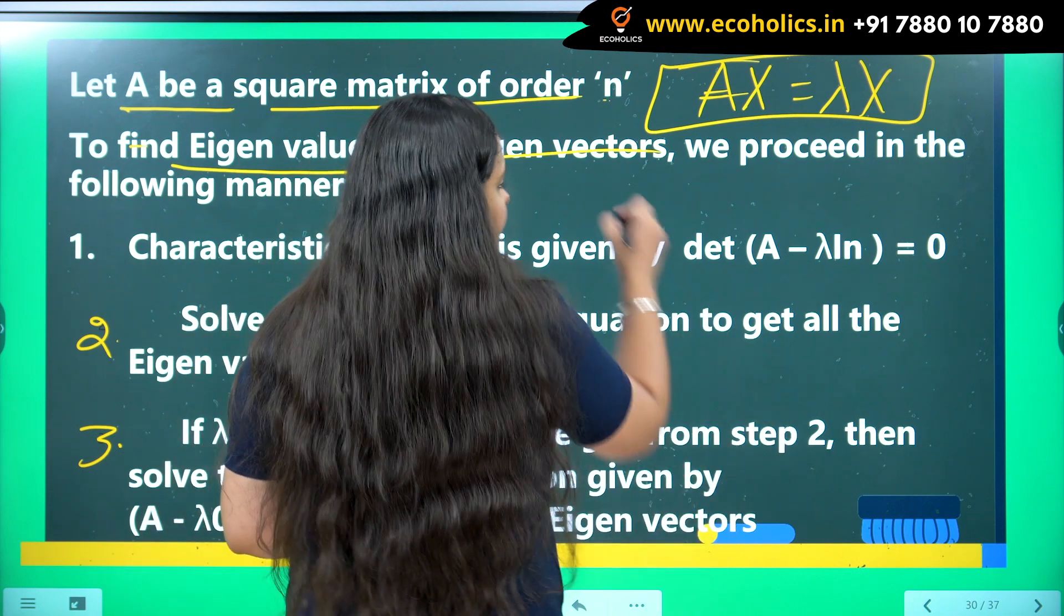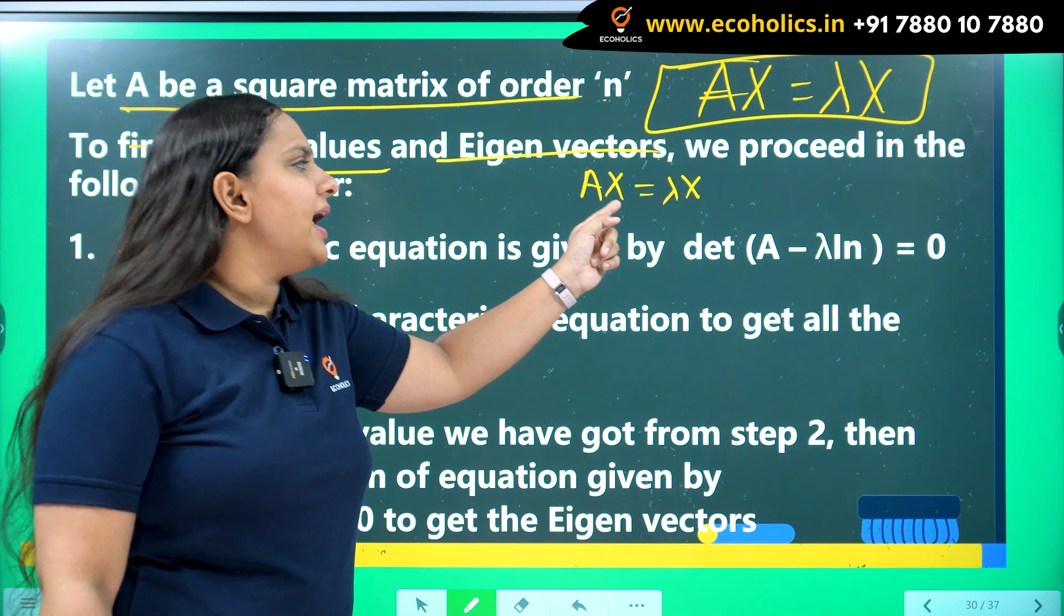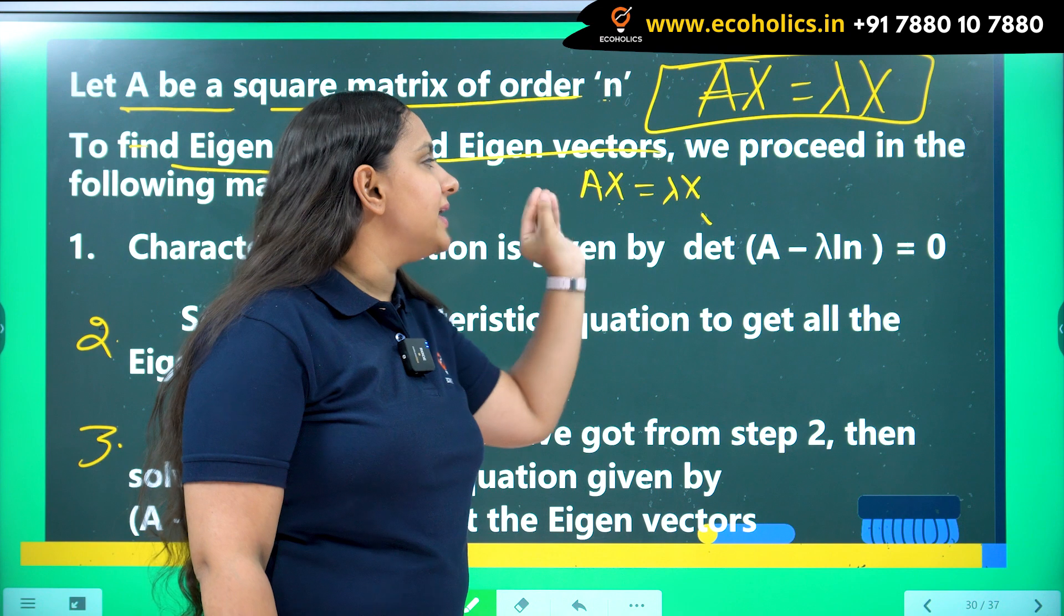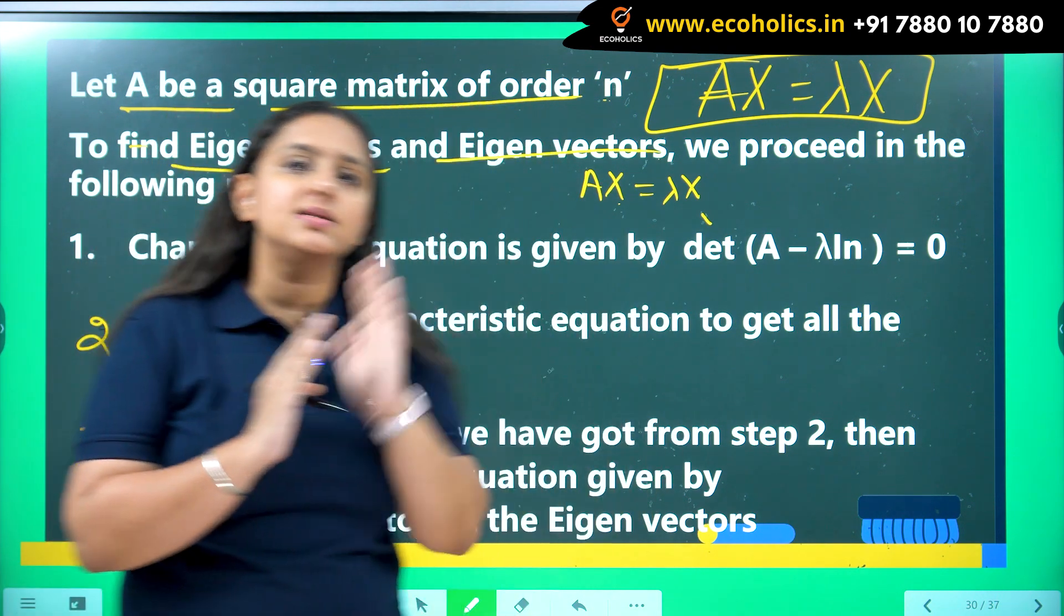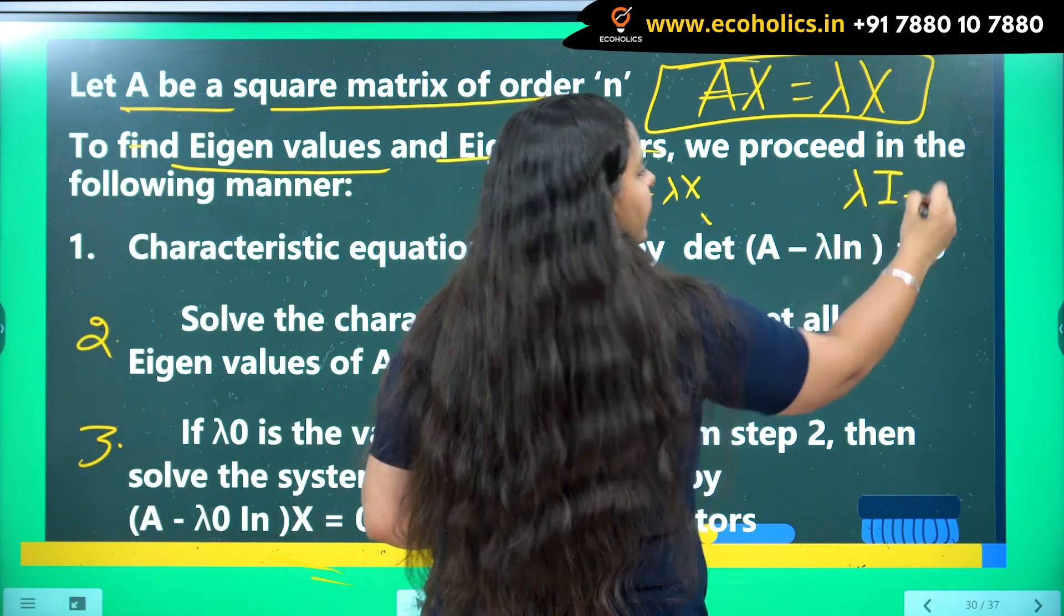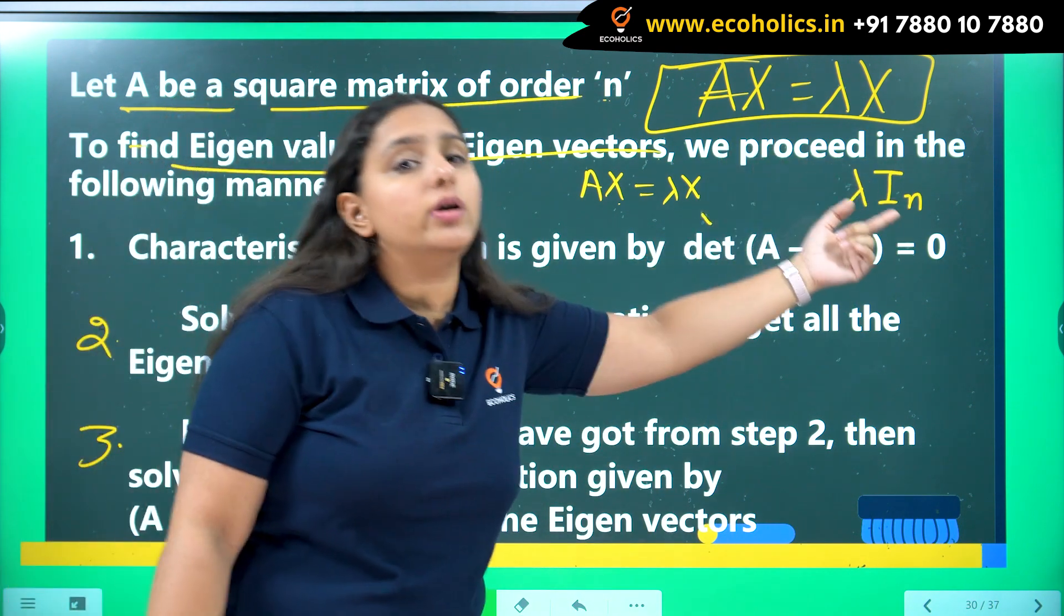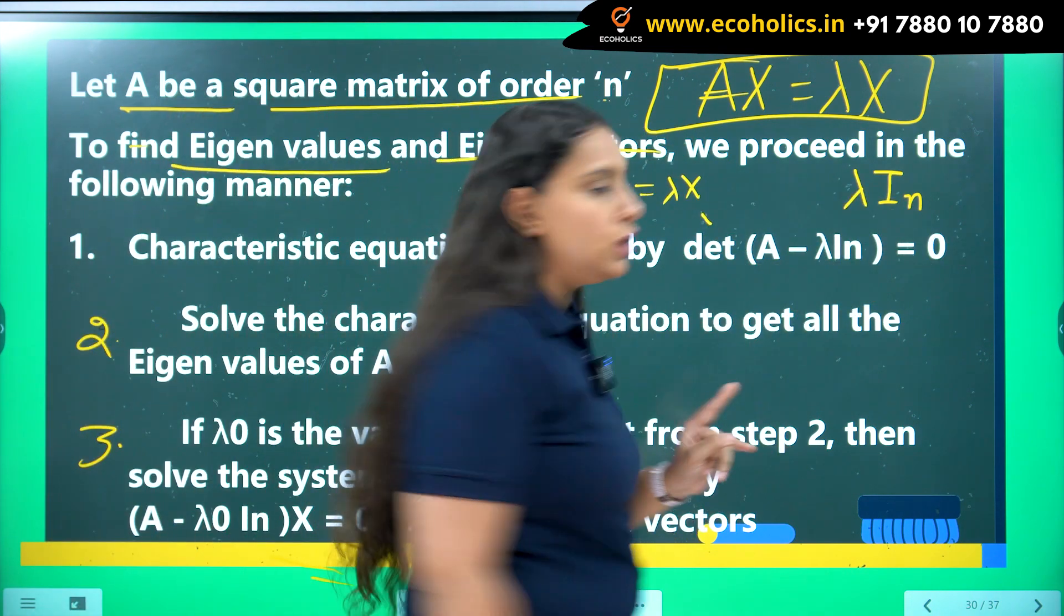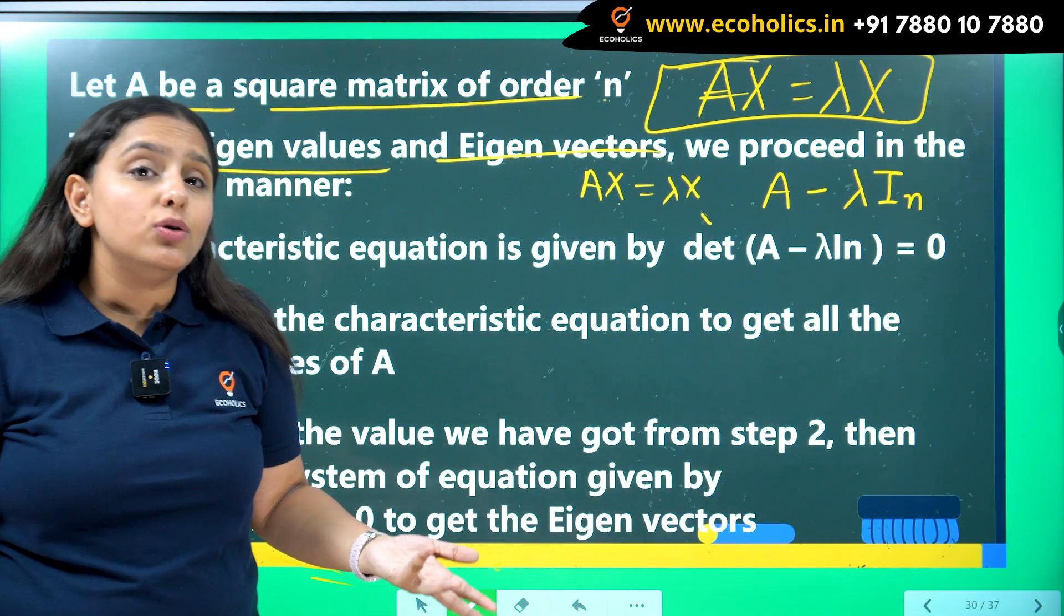When we are saying Ax is equal to lambda x, it means that x and x are same, they are identical. In other words, A and lambda also has to be same. But A is a matrix, lambda is a scalar. So how can they be same? If I multiply lambda with the identity matrix of order, of the same order which is with A, I can convert lambda into a matrix. So it means the difference of A and lambda should be 0, but they are matrices.